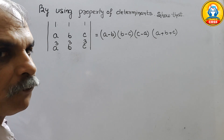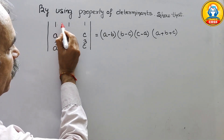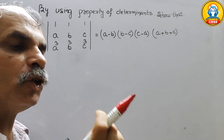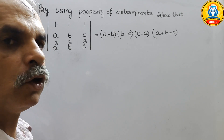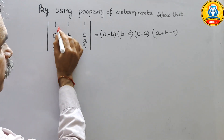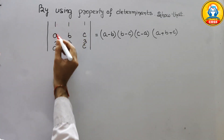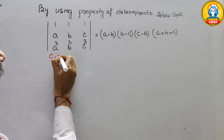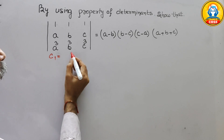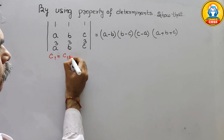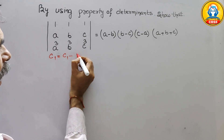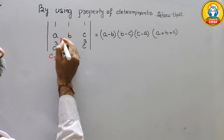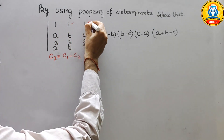First, since there are 1s in column 1, we will make two entries zero. We can apply column operations — C1 minus C2 and C1 minus C3 — to create zeros in the second and third rows of those columns.